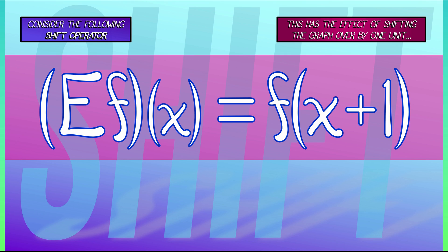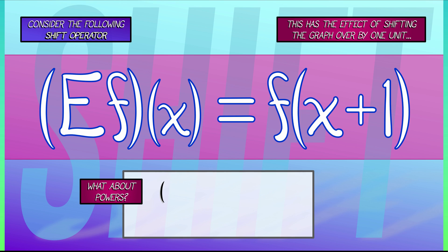But it has some things in common. We can take powers of the shift operator. We can apply the shift again and again and again. What is the nth power of the shift operator? E to the n applied to f evaluated at x is f of x plus n. We've just shifted over by n steps.